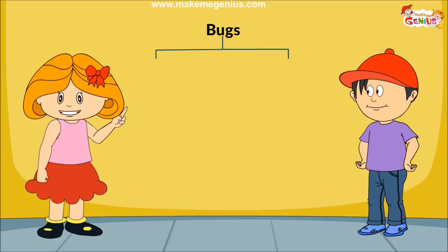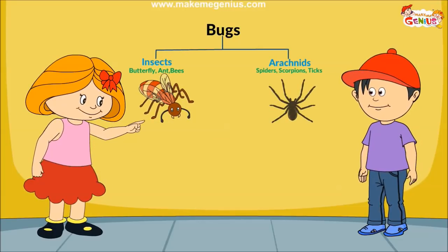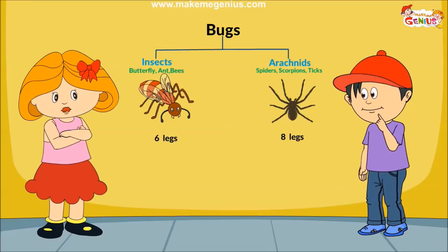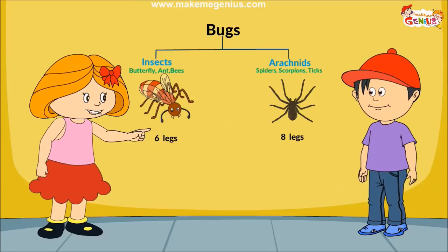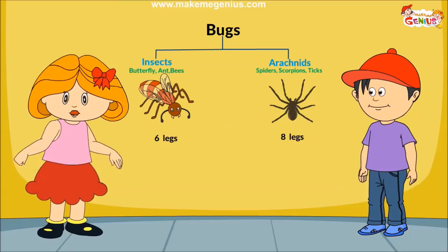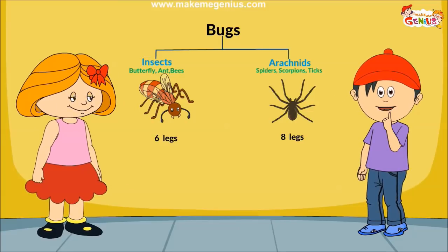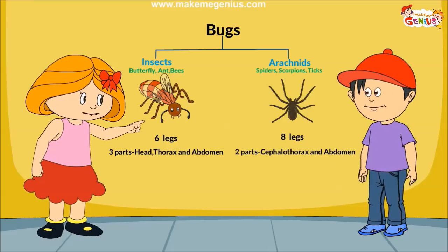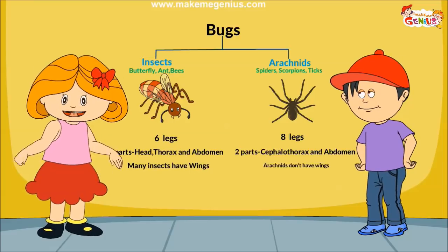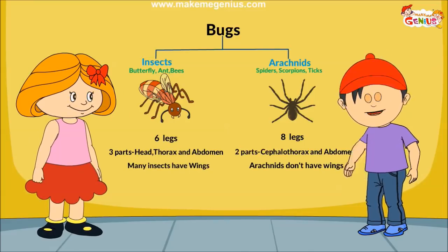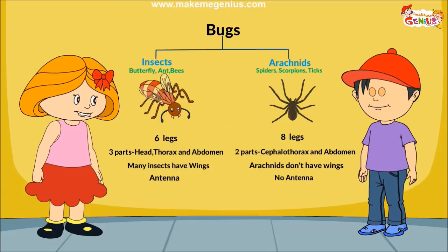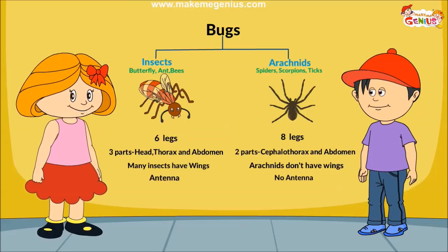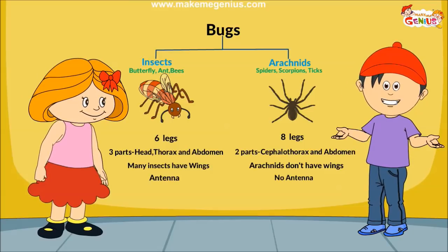So it is different from the ant and the butterfly. Bugs are of two types: insects and arachnids. Bugs having eight legs are known as arachnids. Apart from spiders, scorpions and ticks also have eight legs. Insects have three body parts, whereas arachnids have only two. Most insects have wings, but none of the arachnids has wings. Insects have antennae, but spiders do not. Let's go to the garden and learn more about bugs — that's a great idea!